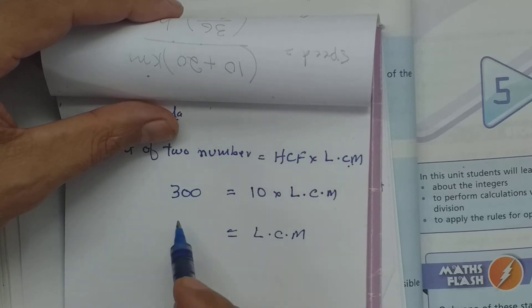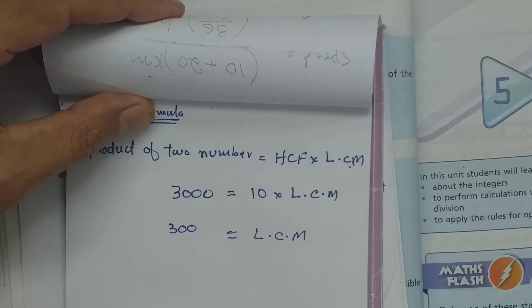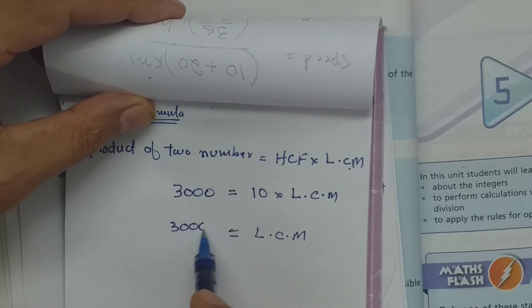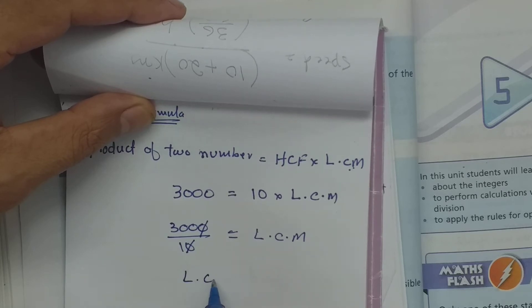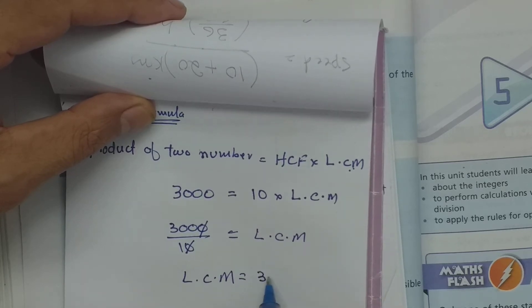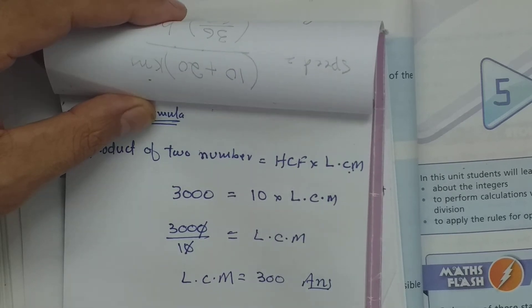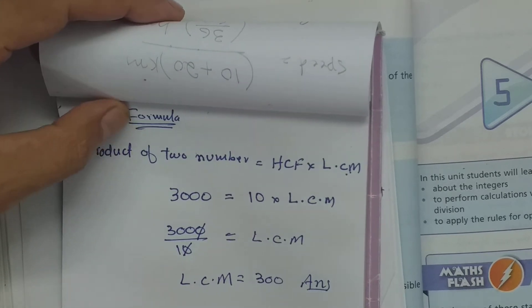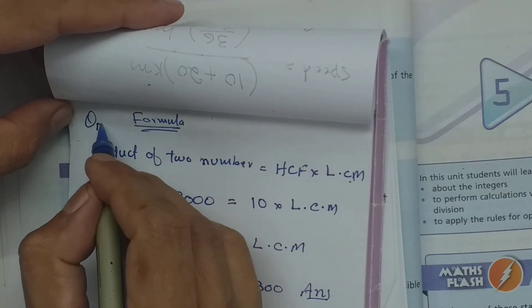3000 divided by 10 gives us LCM = 300. This was question number eleven.